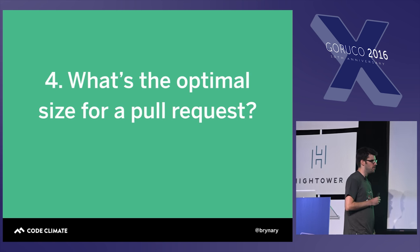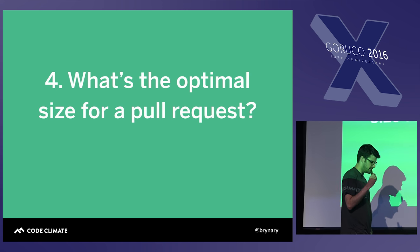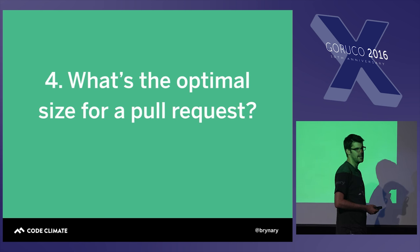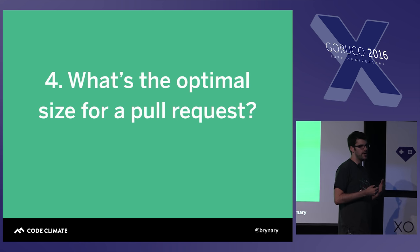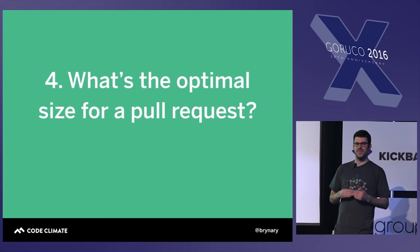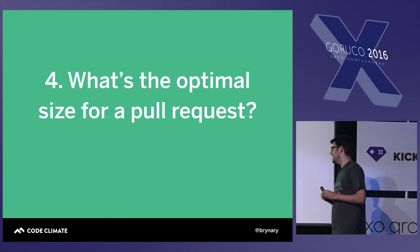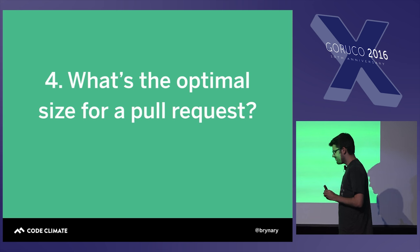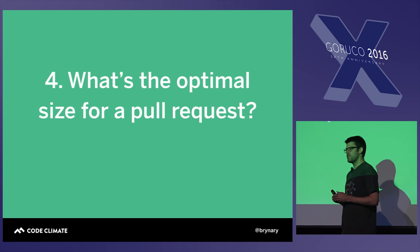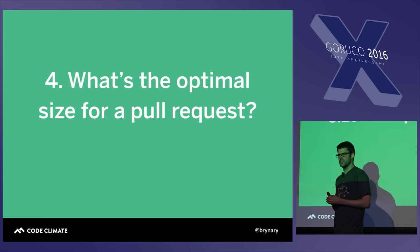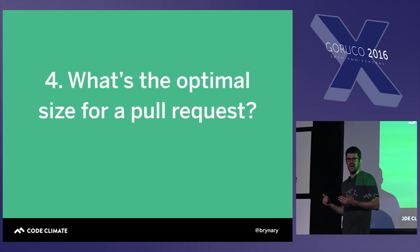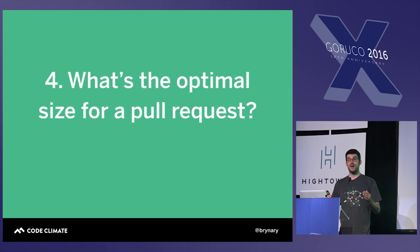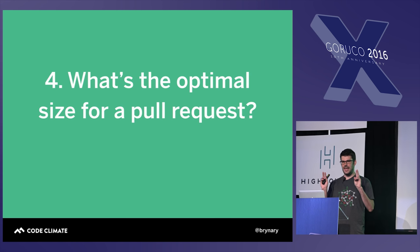The fourth question is: what is the optimal size for a pull request? Many of you have probably seen pull requests as simple as a single line or word change, all the way up to those very large pull requests that incorporate thousands and thousands of lines. The joke is that if you present a developer with 10 lines of code to review, they'll probably have 13 comments. But if you present a developer with a 4,000 line pull request, the comment will be 'looks good to me.'